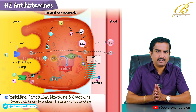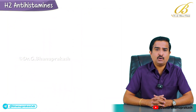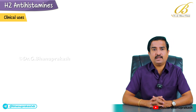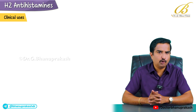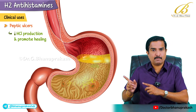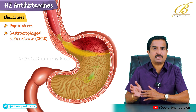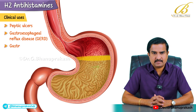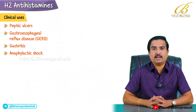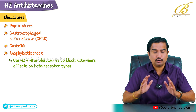These drugs make them effective in conditions where excess acid production is problematic. The clinical uses of H2 antihistamines are primarily related to their acid-suppressing effects. They are commonly used for peptic ulcers — mainly to reduce hydrochloric acid production and promote healing — and for GERD (gastroesophageal reflux disease) to alleviate symptoms caused by acid reflux, and gastritis mainly to reduce inflammation of the stomach lining.